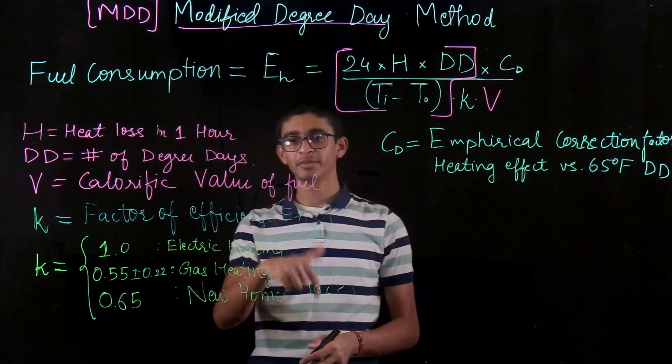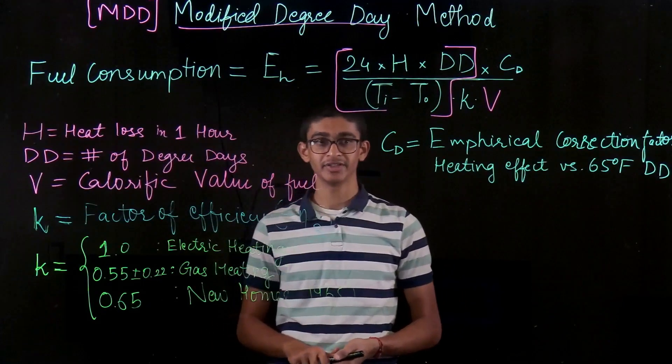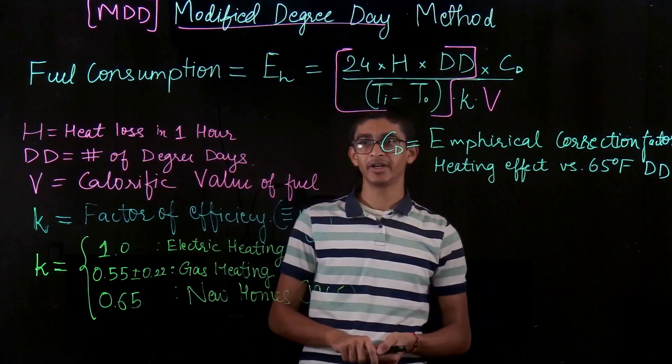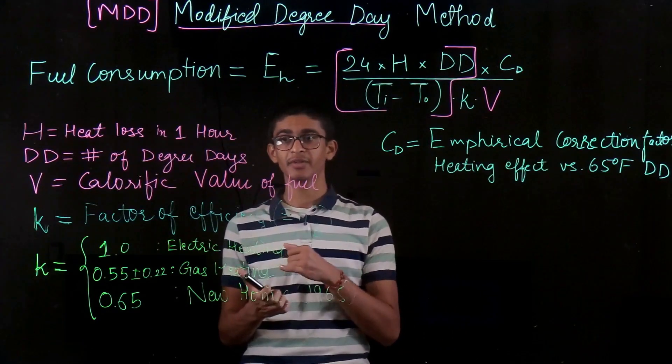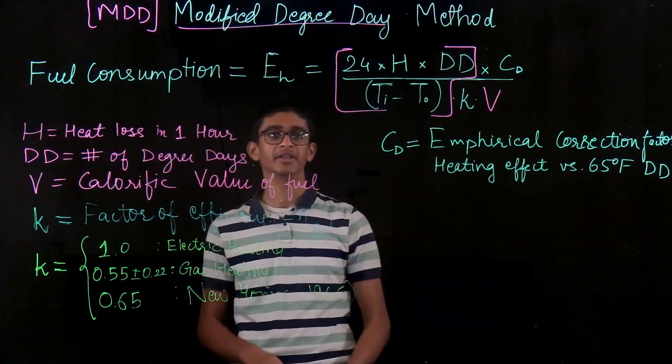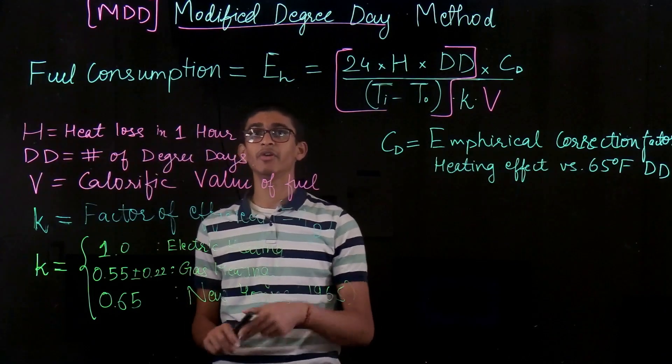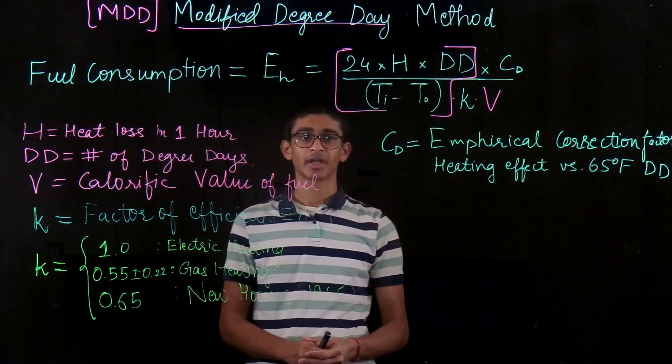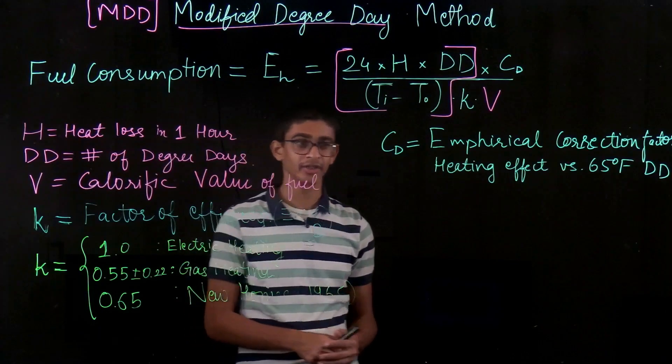So we have taken care into account while we move ahead into the next one which is the variable base degree day. Over there we are going to take into our account the variable balance temperature based on the specific condition of our building. So that's all which we have with respect to modified degree day method. And hope to see you in the next video. Thank you.